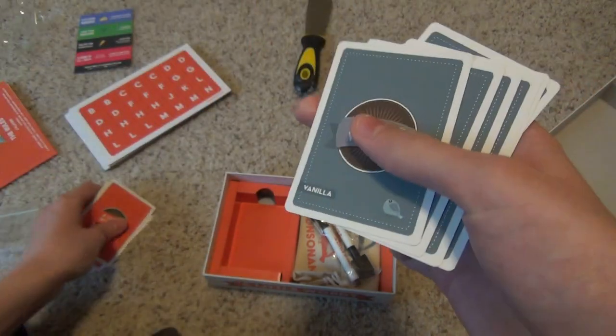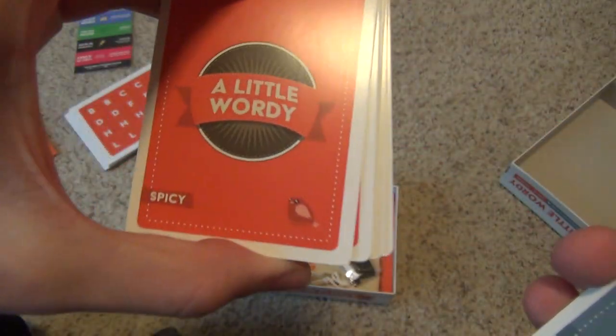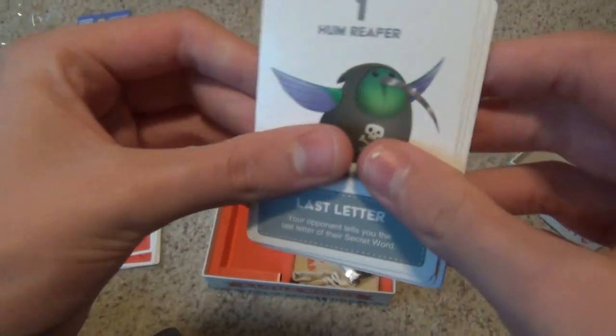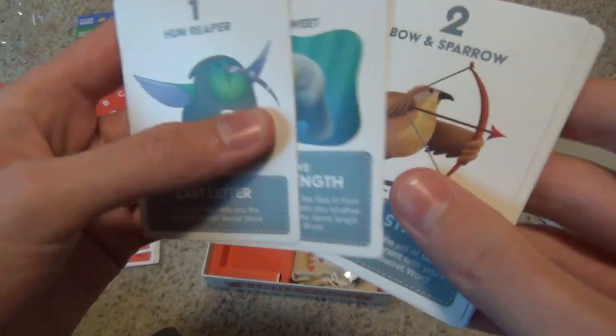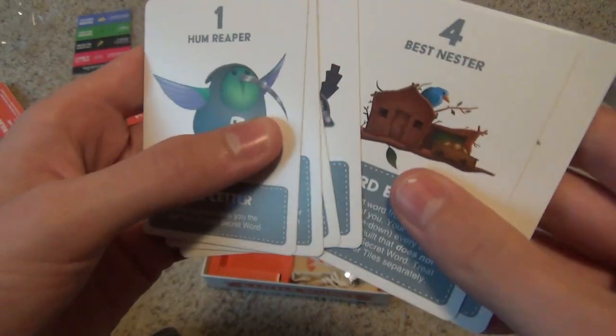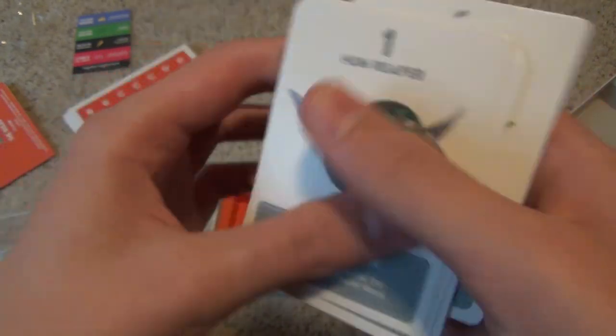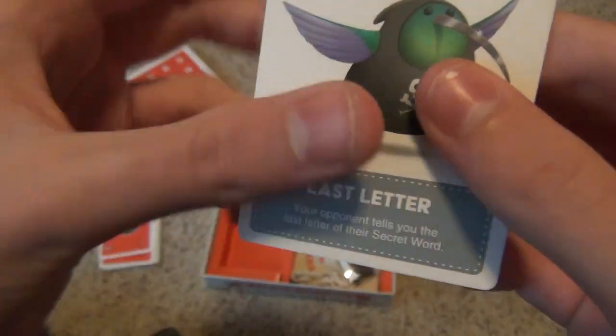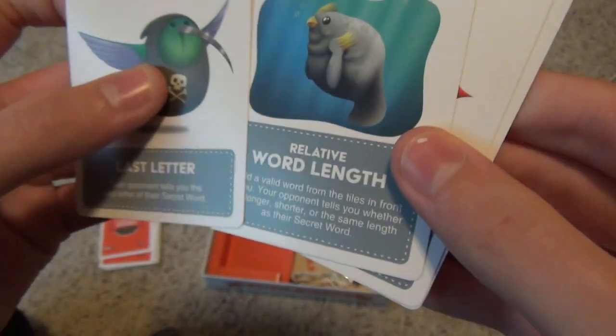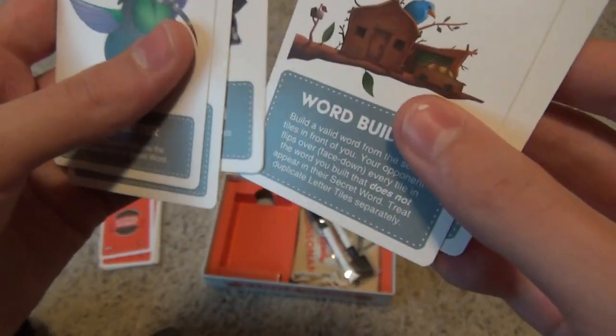So we got the red ones and the blue ones. These are vanilla and these are spicy. Let's get a good look at them. Hum Reaper, Mana Tweet, Bow and Sparrow, Cater Pigeon, Best, Nester, and Dine Owl Soar. So you get the last letter, you can get the relative word length, the letter strike, exact word length, word builder, and first letter.